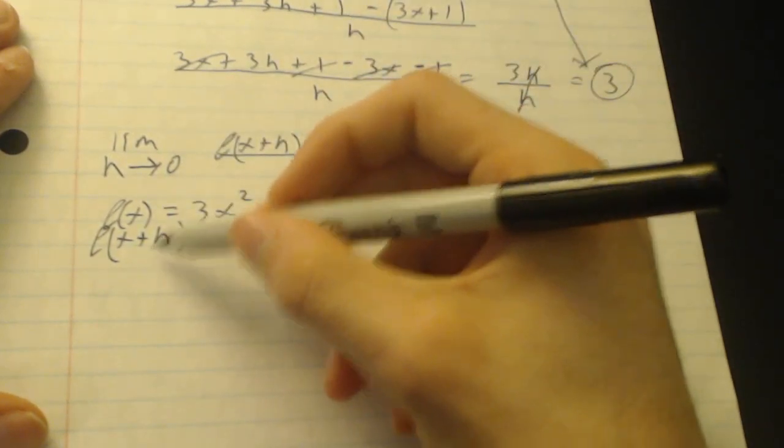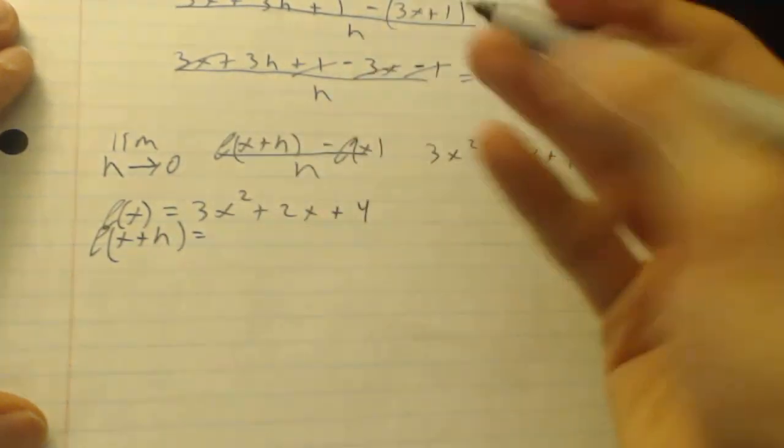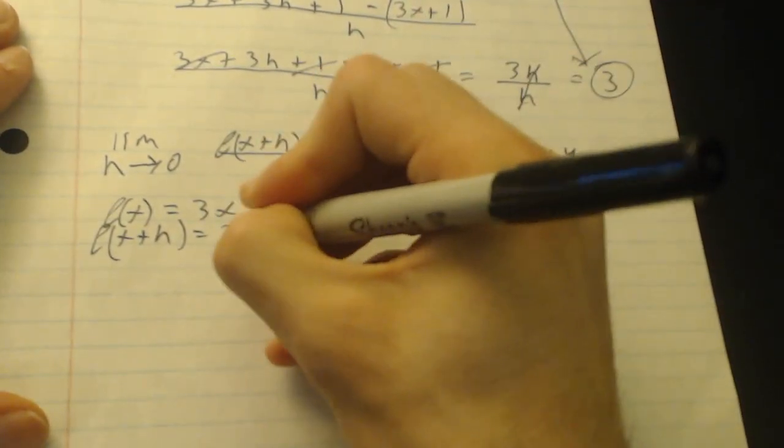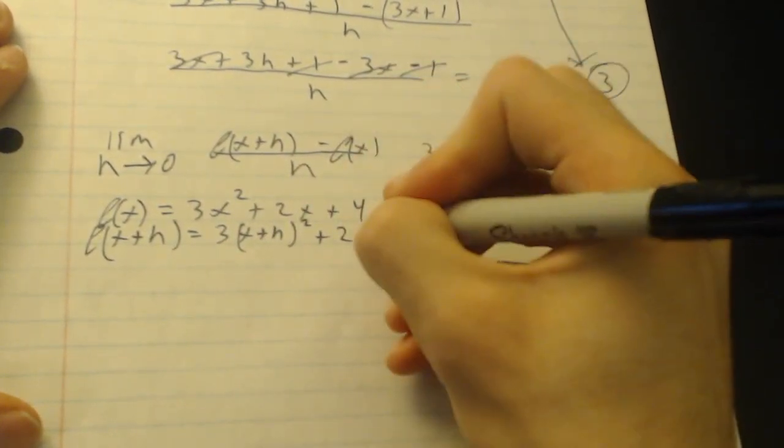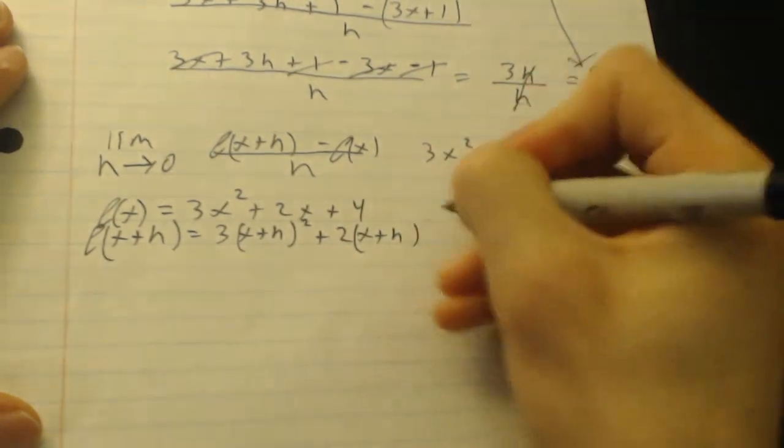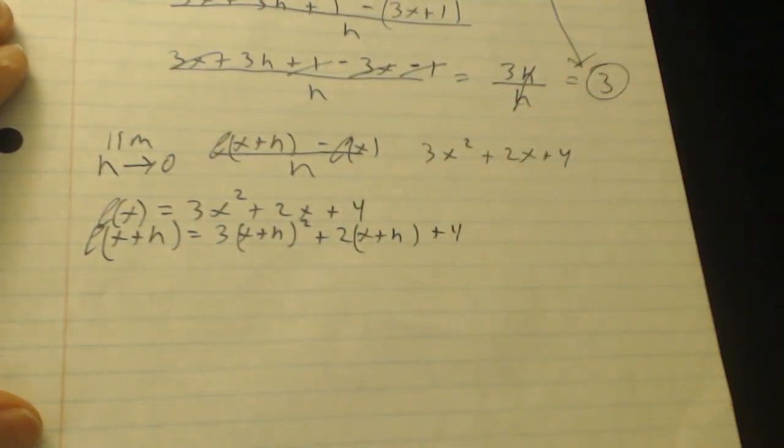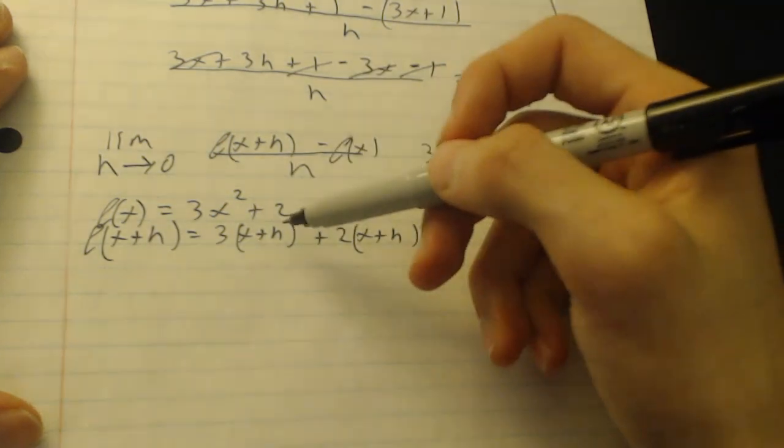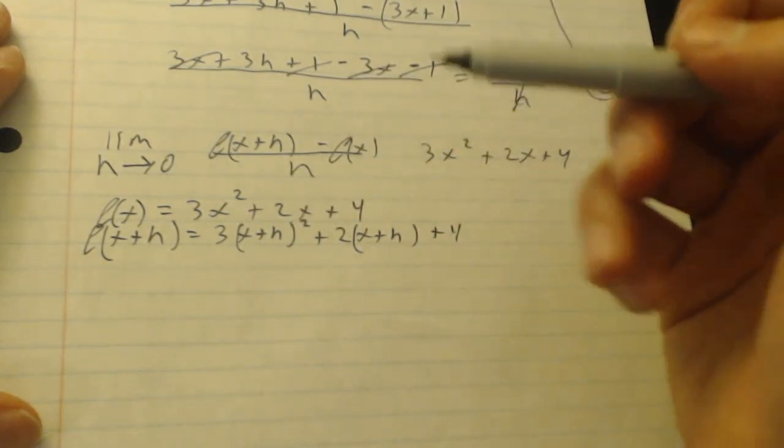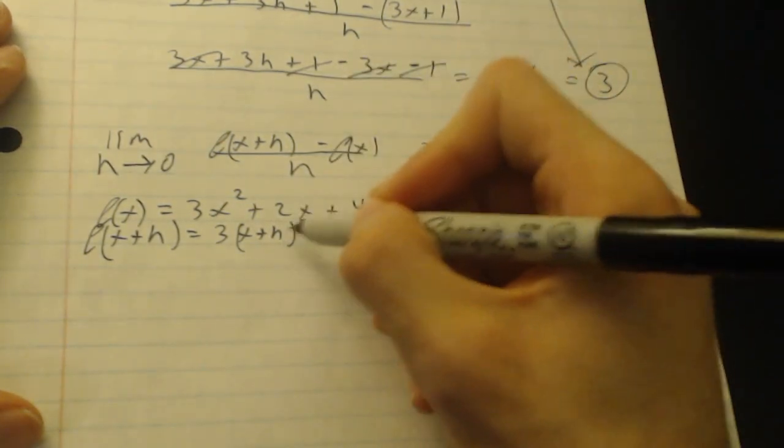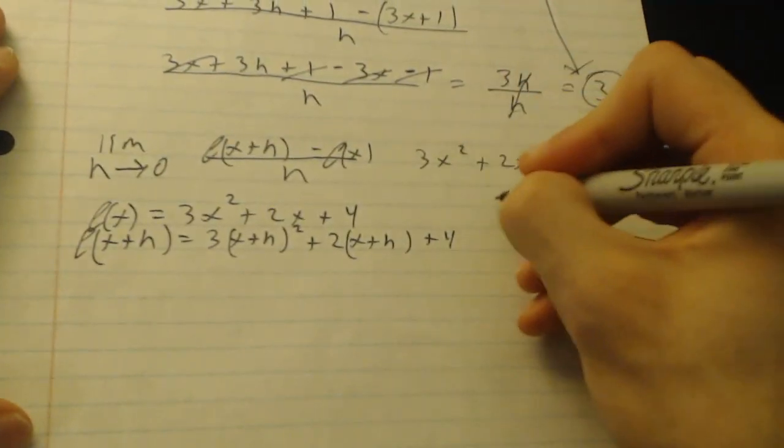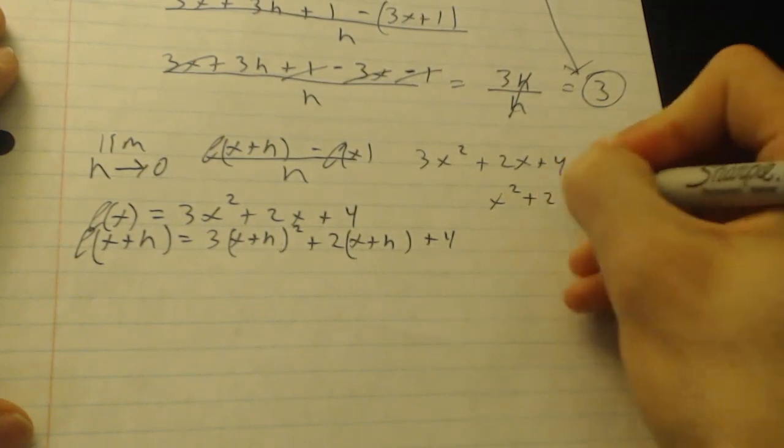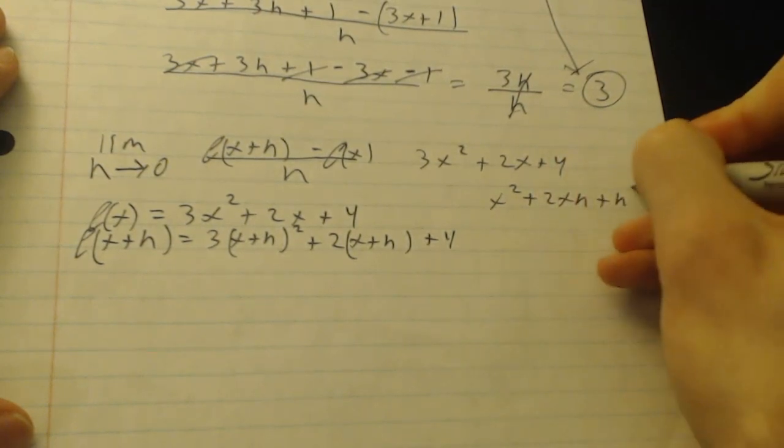Now remember, all you do is just plug in x plus h to where the x's are. Just do 3 times x plus h squared plus 2 times x plus h plus 4. Alright. Now you just have one extra step or a few extra steps, you'll see. We just have to foil this out, x plus h, which actually comes out to be, I'll do it on the side here, x squared plus 2xh plus h squared.